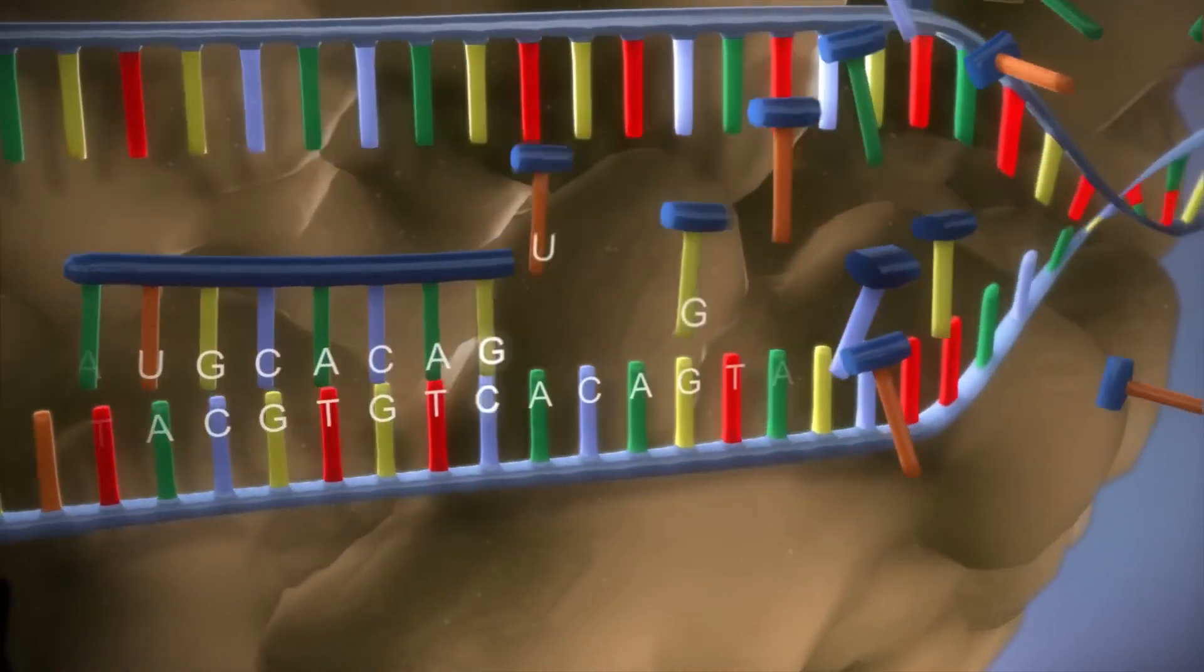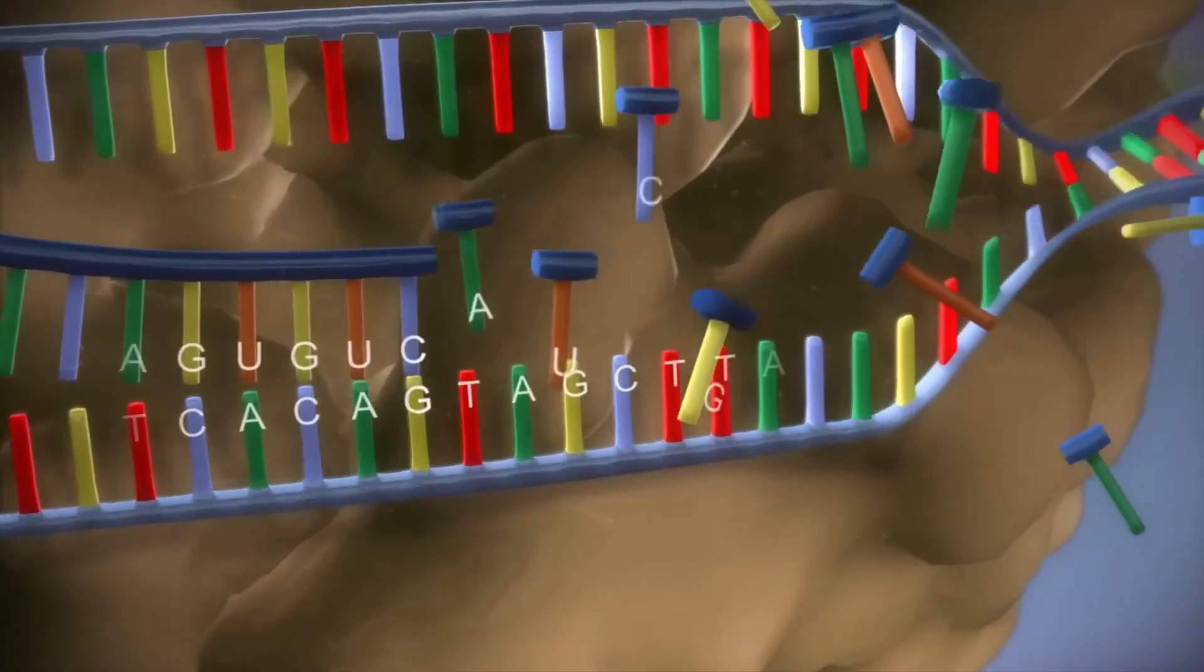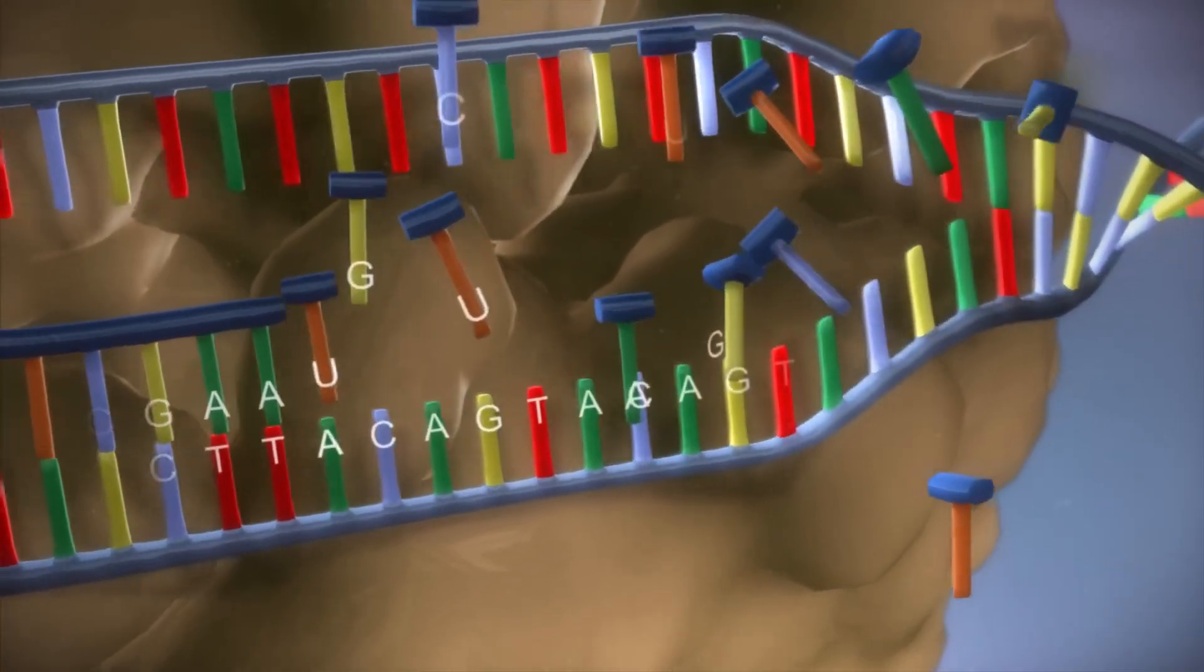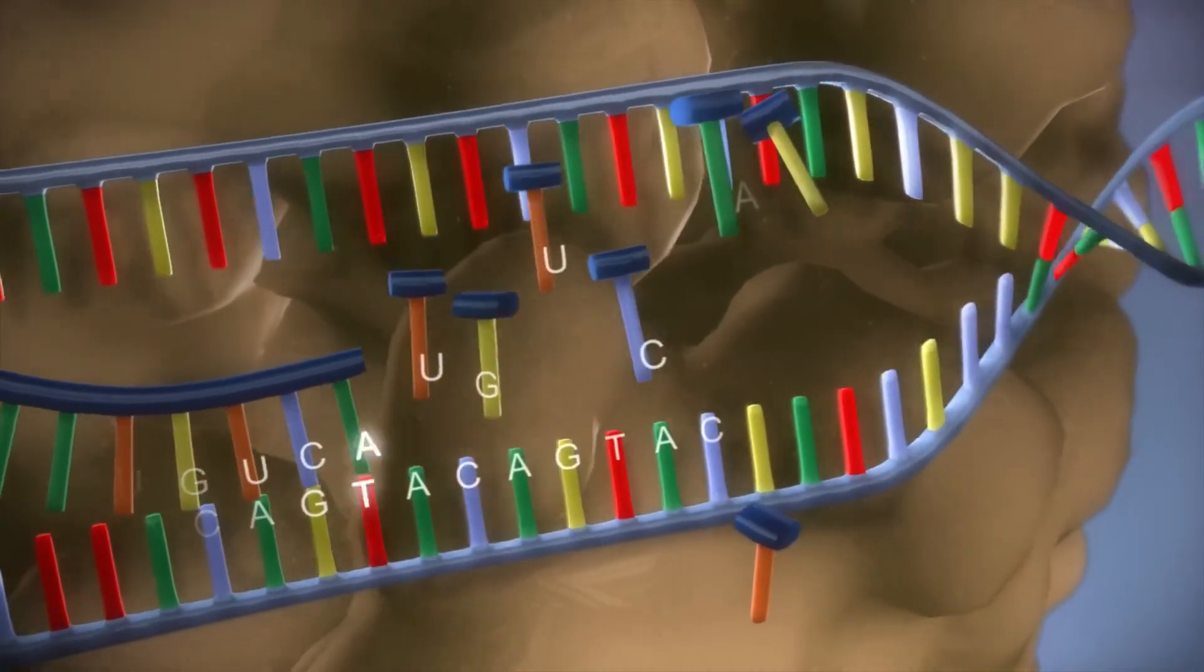The DNA code determines the order in which the free bases are added to the messenger RNA. This process is called transcription.